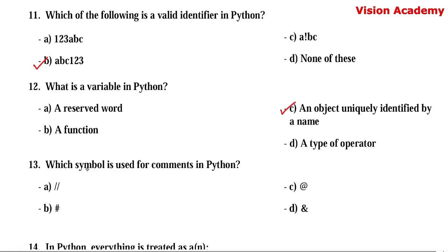Question number 13. Which symbol is used for comments in Python? Option A: double forward slash. Option B: hash. Option C: at the rate. Option D: ampersand. Here, option B — hash — is the right answer.